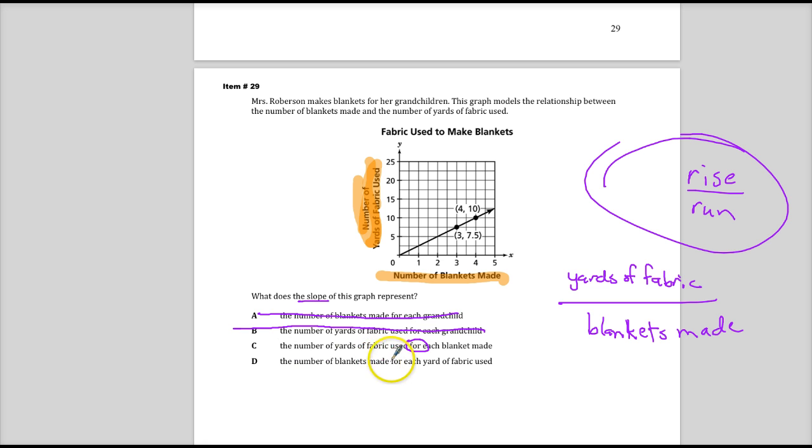And the last one says the number of blankets made for each yard of fabric used. Well, they're both in there, but it doesn't really have much to do with, like, the base unit has to be blankets. So it's yards of fabric per blanket, as opposed to blanket per yard of fabric. It just sets up that way. So the answer to this one is C.